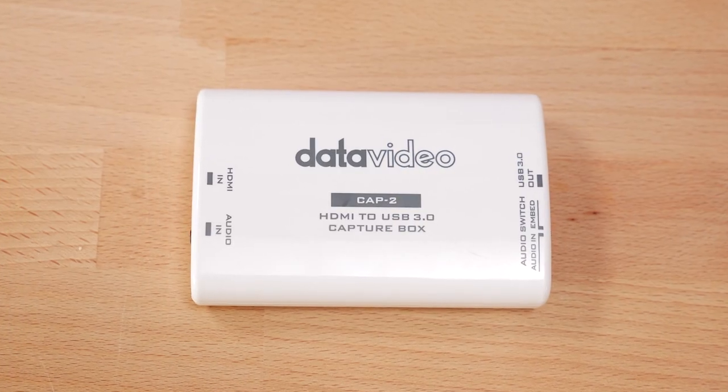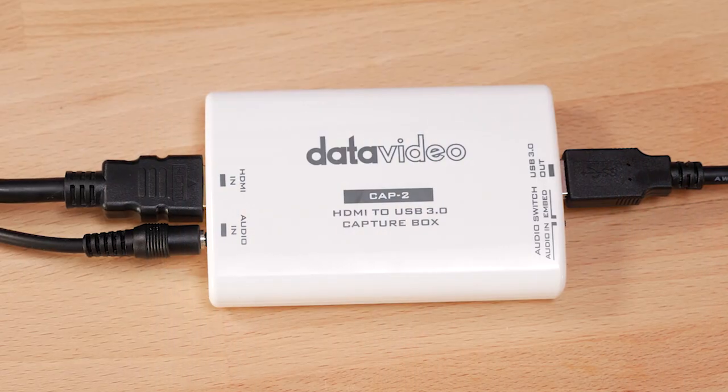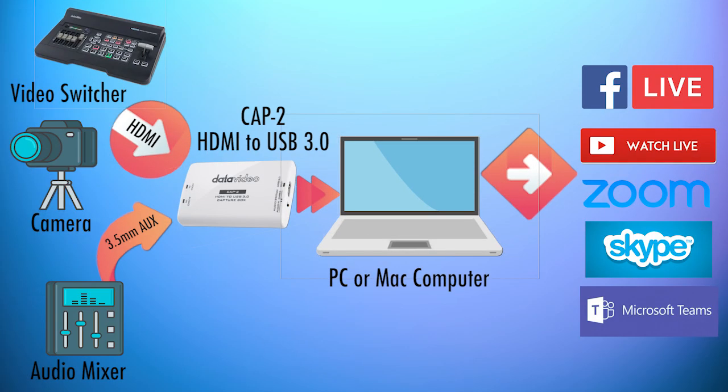This is the DataVideo Cap 2. It's an HDMI to USB 3.0 capture box which converts the HDMI output with embedded audio of a video switcher, camera, or media player into a format your Mac or PC can use to live stream.